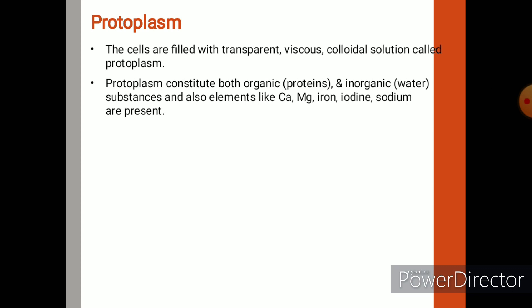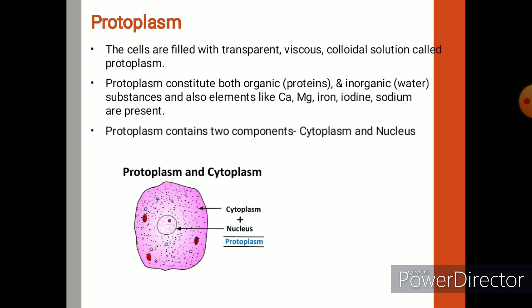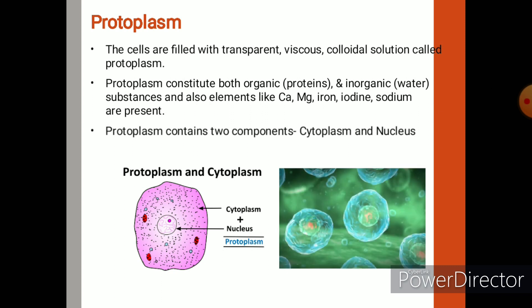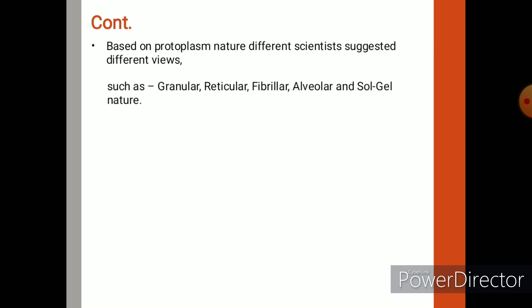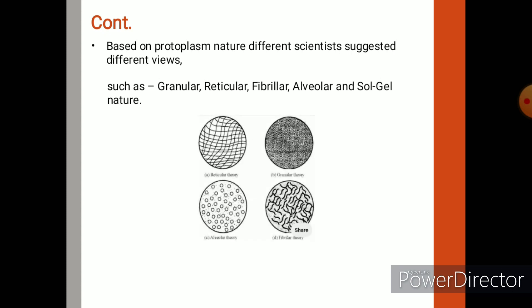Protoplasm also contains elements like calcium, magnesium, iron, iodine, and sodium, and so on. It contains two components: cytoplasm and nucleus, which are combinedly called protoplasm. The protoplasm is bounded by cell membrane or plasma membrane. Based on the nature of protoplasm, different scientists suggest different views — granular, reticular, fibrillar, and alveolar. Among all these, the sol-gel nature is widely accepted.